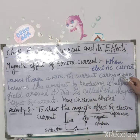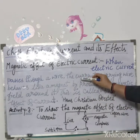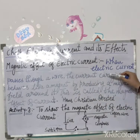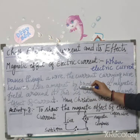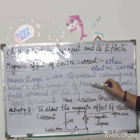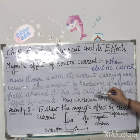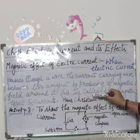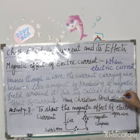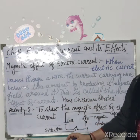Jab electric current kisi wire ke through pass hota hai, to woh current carrying wire ek magnet ki tarike se behave karne lagta hai — apne charo taraf magnetic field produce kar leta hai. Aur isi ko magnetic effect of current kehte hain.